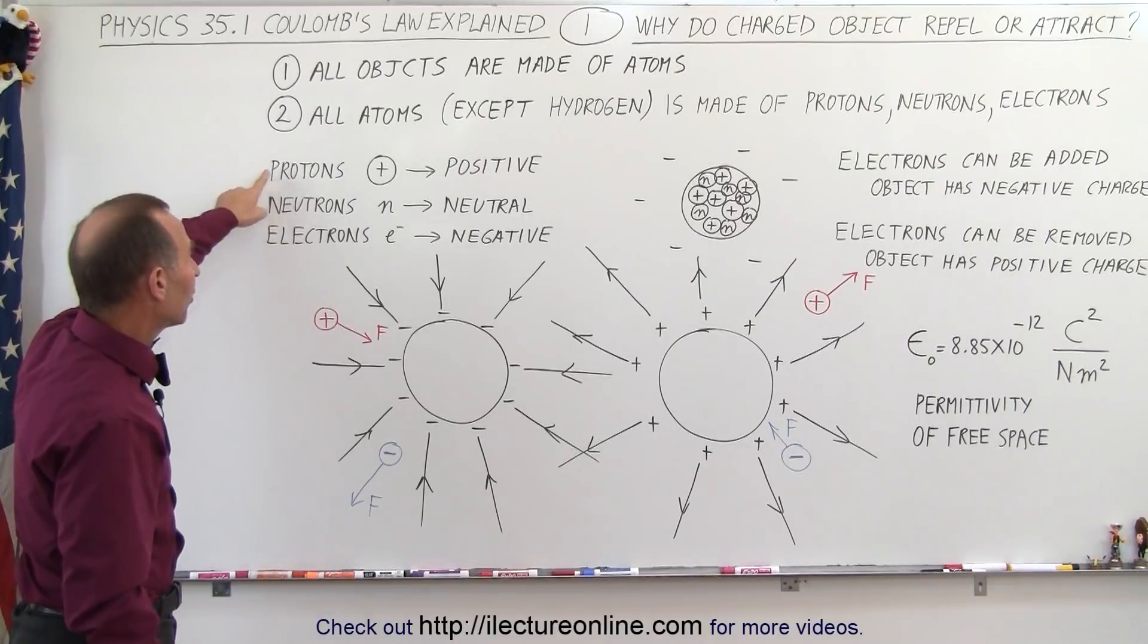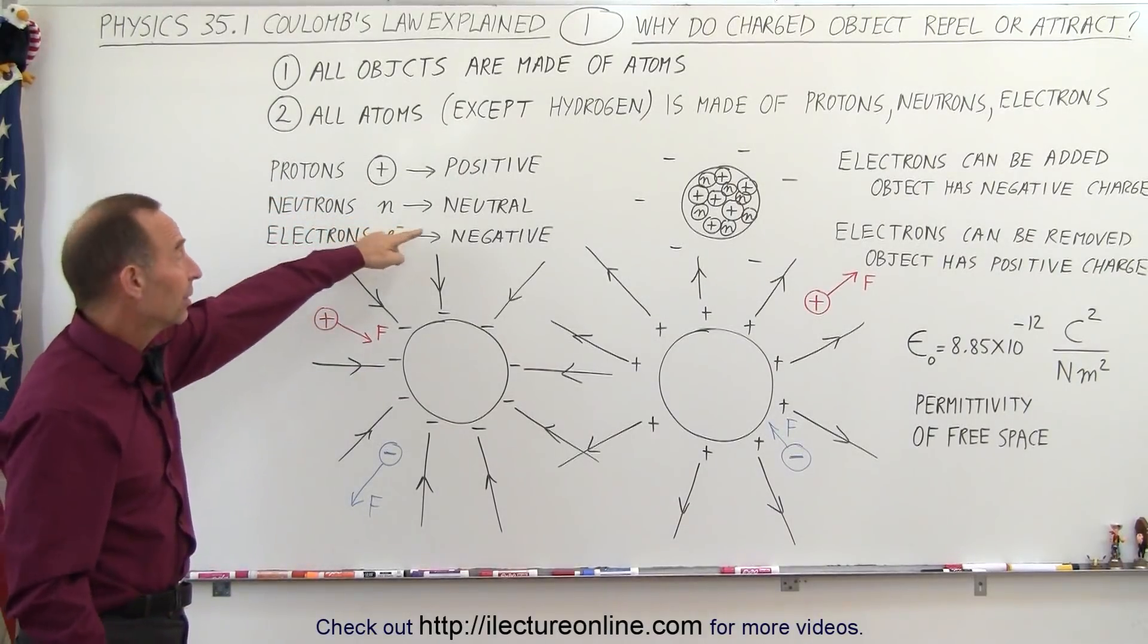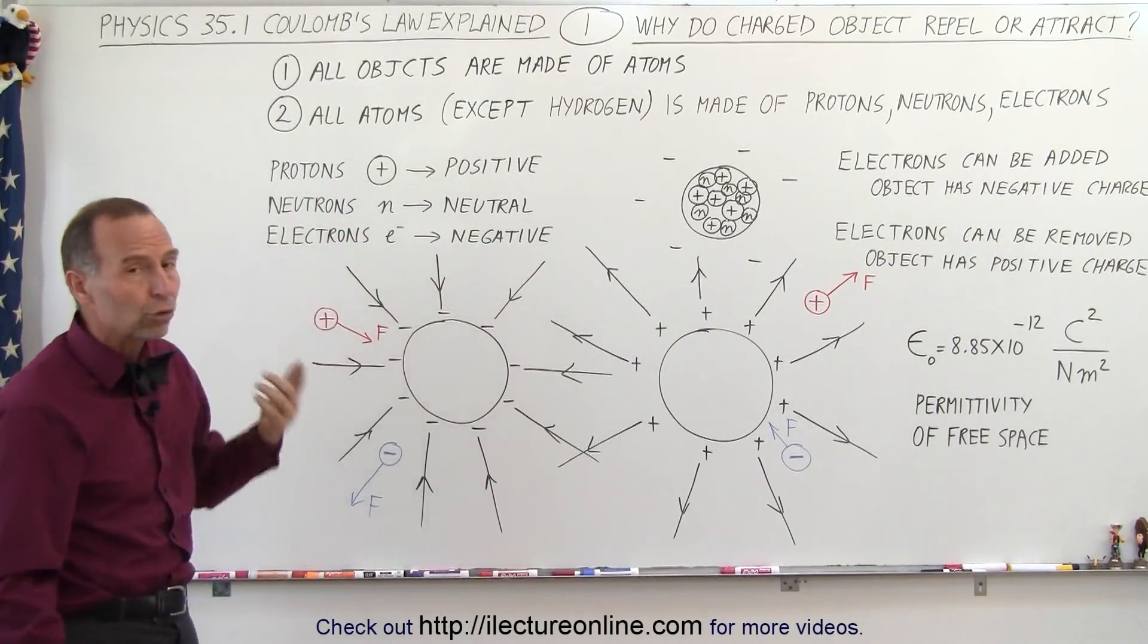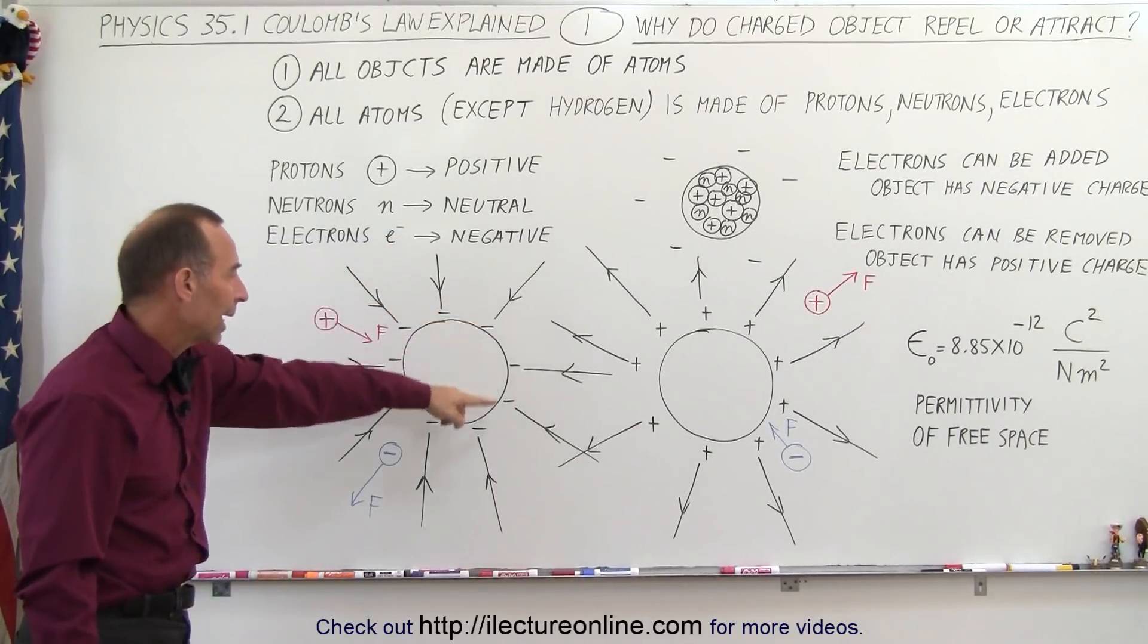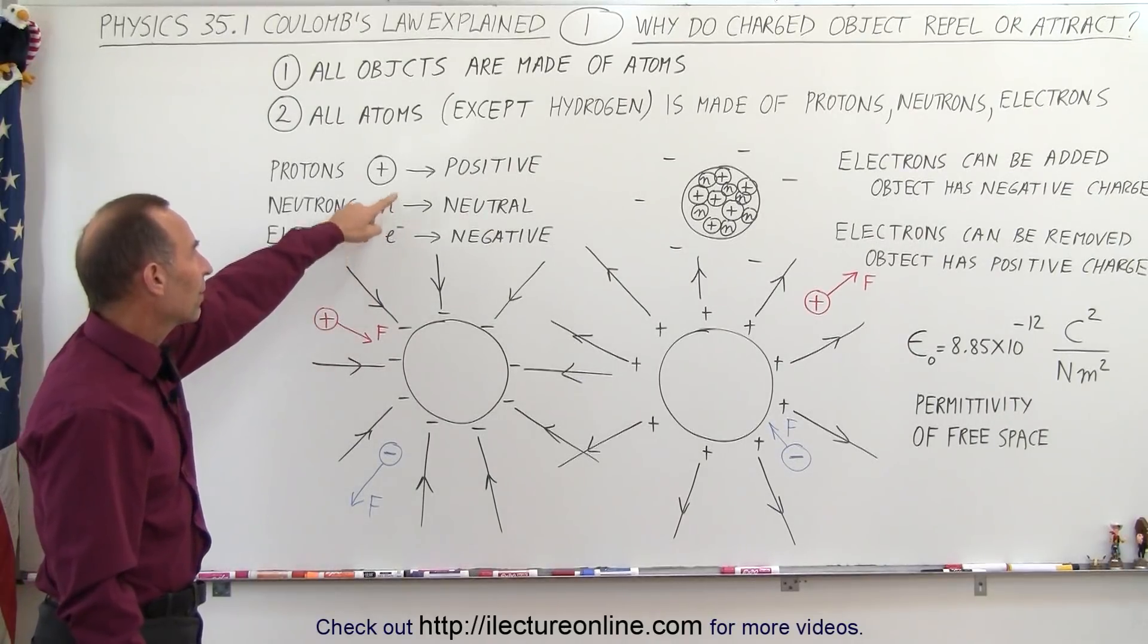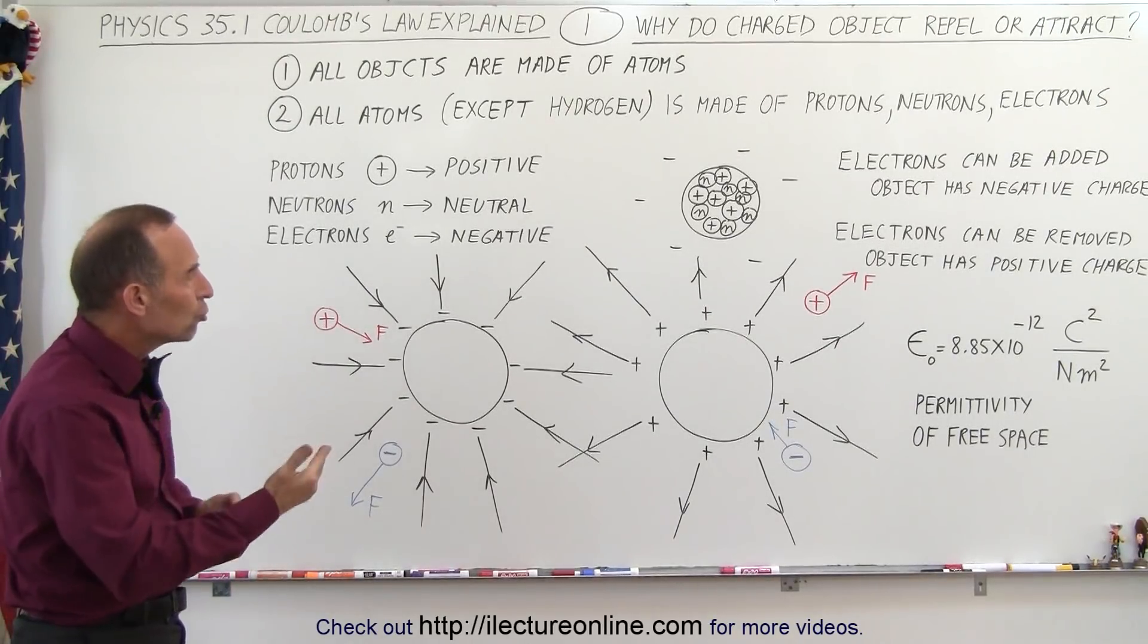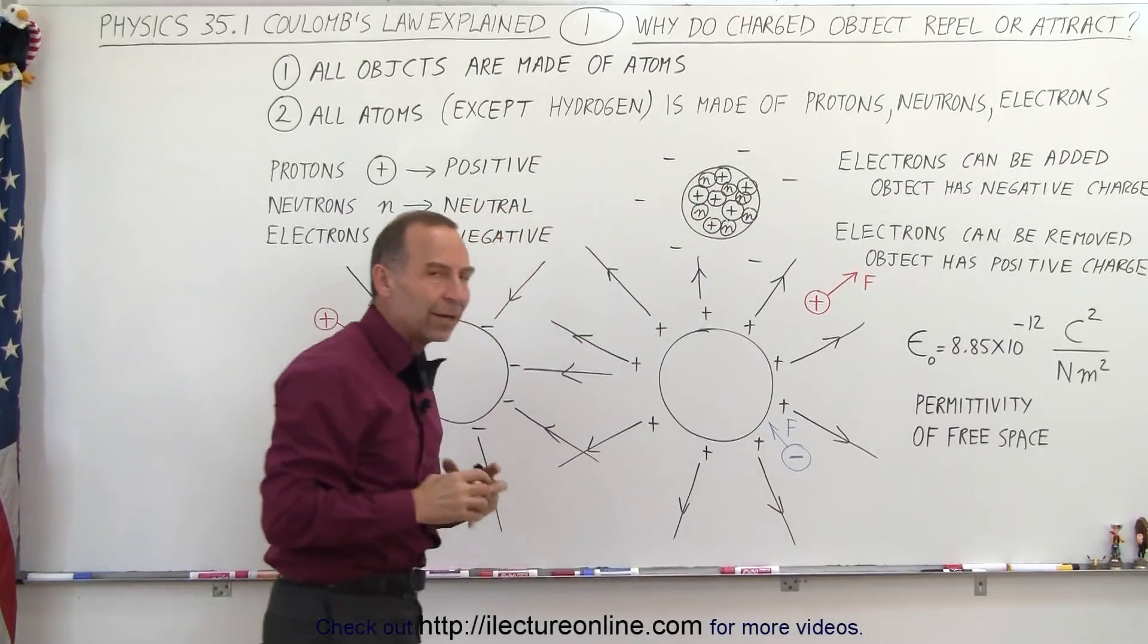So protons are the particles that are positively charged, neutrons by their name are neutral, they don't have any charge, and electrons are negatively charged, and these are typically the symbols used for these. In atoms the protons and the neutrons make up the nucleus of the atom.